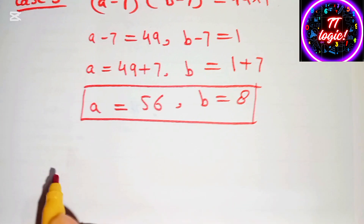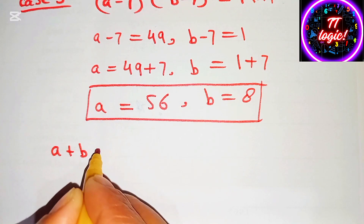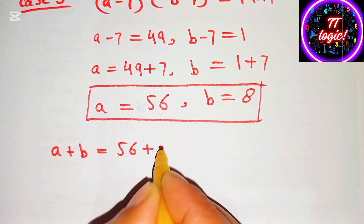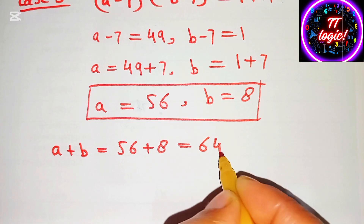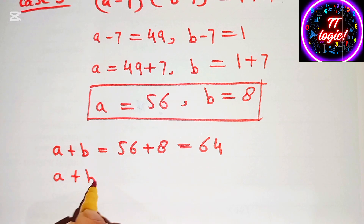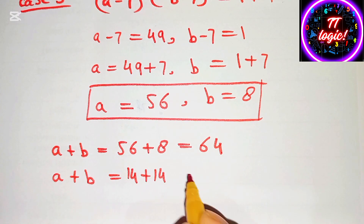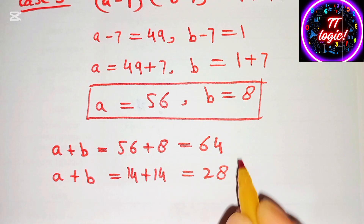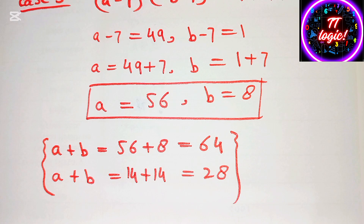So our final answers are: A plus B equals 56 plus 8, which equals 64; and A plus B equals 14 plus 14, which equals 28. Here are our final answers. Thank you so much for watching my video and don't forget to subscribe to my channel.